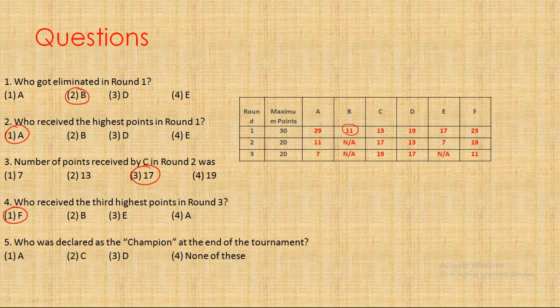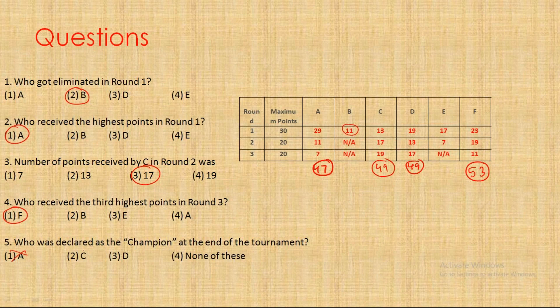Who received the third highest points in round three? Highest, second highest, third highest - F is the person who received third highest points in round three. And who was declared as the champion at the end of the tournament? A, C, D - let's calculate. A's sum is 47, C's sum is 49, so clearly it cannot be A. And D's sum is 49. Now how can C and D both be the winners? So let's have a look. F has a total of 53, so none of these is the answer. F has to be the champion.